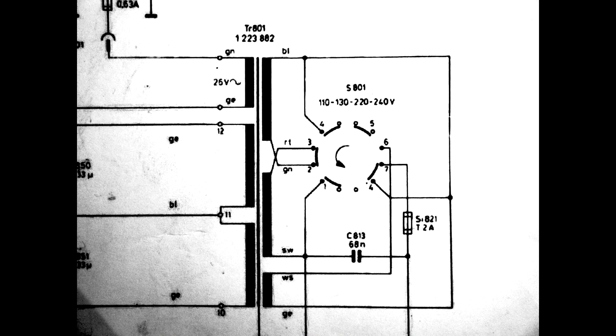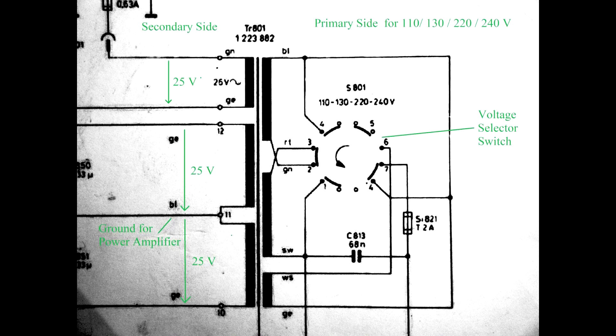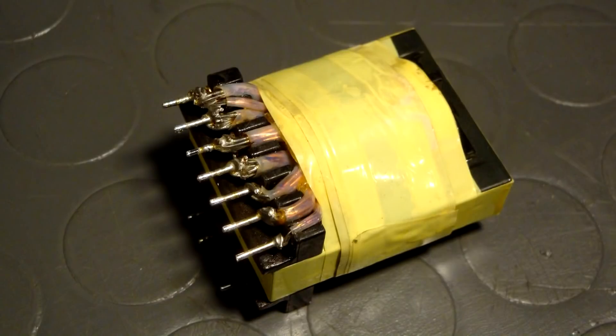A good example for that is this transformer inside an audio amplifier. The transformer has three separate primary and three separate secondary windings. On the primary side, a voltage selector switch configures the three primary windings in such a way that the transformer can be operated from 110, 130, 220 and 240 volt grids. The upper secondary winding supplies the pre-amplifier while the two other secondary windings are connected together to supply two symmetrical voltages for the power amplifier stage. As I will explain later, the transformers used in modern switched mode power supplies also in most cases have several windings.